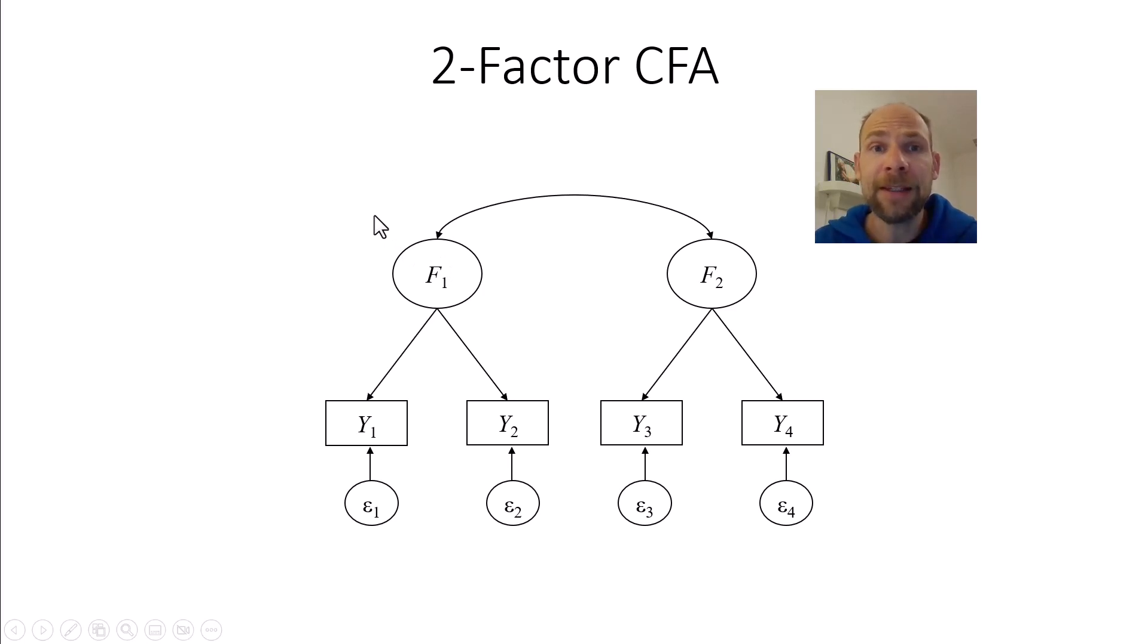because when you have at least three indicators for each factor, then a factor model by itself, so a single factor model, would already be identifiable regardless of whether the factor is correlated with another factor or with an external variable or something like that.